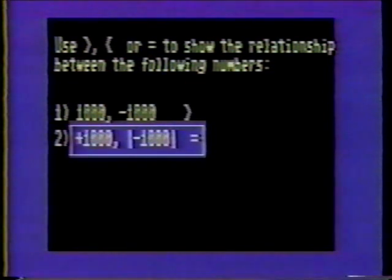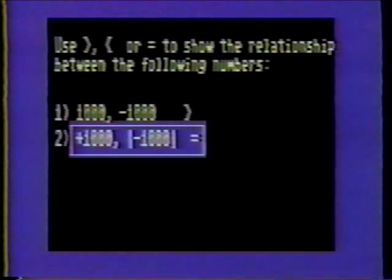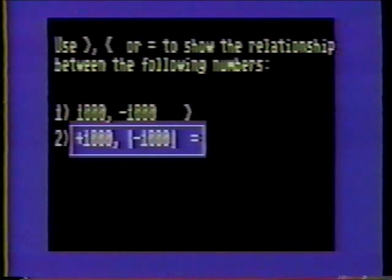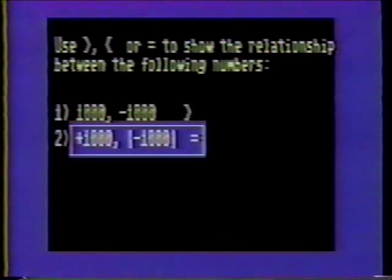Number two: positive 1,000 and the absolute value of negative 1,000. First, solve for the absolute value of negative 1,000, which is 1,000. Both numbers are positive; therefore, positive 1,000 equals 1,000.